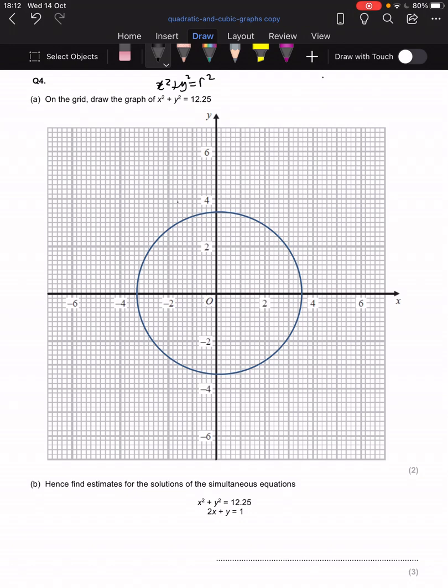This tells me that the radius squared is 12.25. Obviously, you'd use a calculator for this. This was from a calculator paper. To work out the radius, you'd square root 12.25, and that's just 3.5.